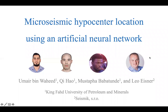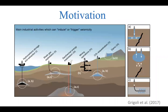Hi everyone, welcome to my talk on microseismic hypocenter location using an artificial neural network. The reason why we are interested in the problem of location inversion is because human activities including hydraulic fracturing, wastewater injection, and mining have resulted in a sharp increase in the number of earthquakes observed in historically quiet tectonic areas around the world. In addition to causing considerable economic losses, such events are increasingly becoming a threat to public safety.